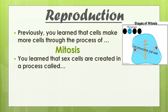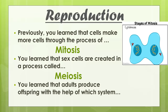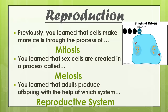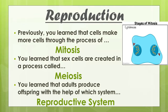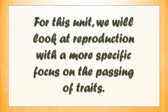Previously, we learned about how mitosis and meiosis takes place in your body. We learned that cells make more cells through the process of mitosis, and sex cells are created through meiosis. Adults produce offspring with the help of the reproductive system. For this unit, we will look at reproduction with a more specific focus on the passing of traits from one generation to the other.